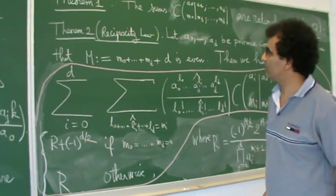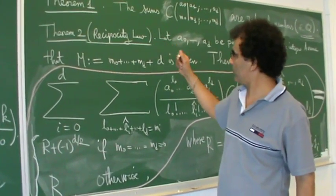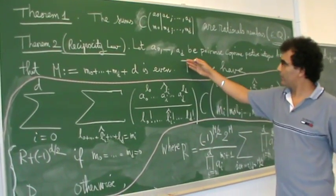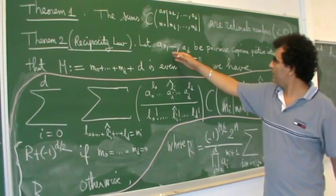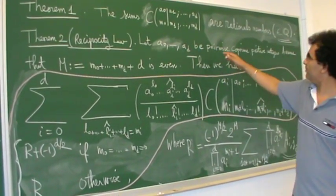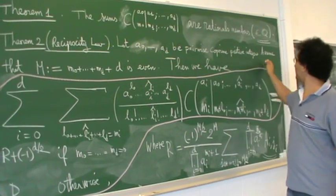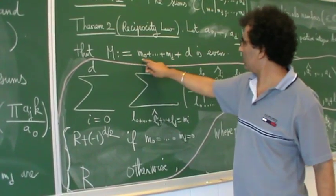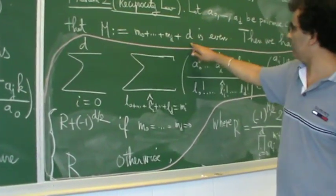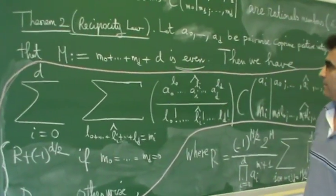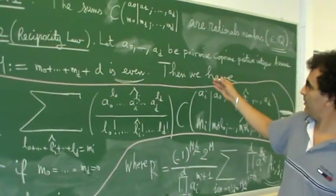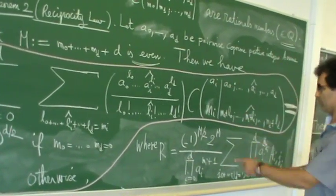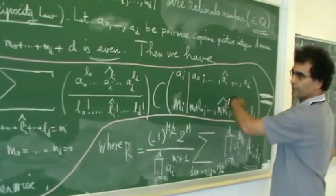The second result: we prove reciprocity laws for them. Precisely, for any A0 to AD pairwise coprime positive integers, and we put M as the summation over all M0 to D plus D, which we assume to be even.